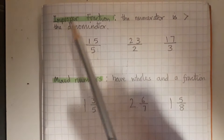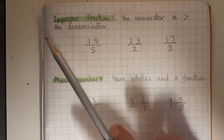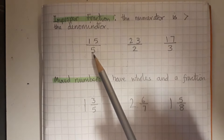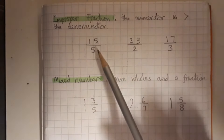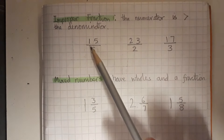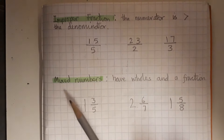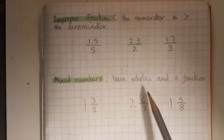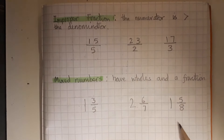We have improper fractions where the numerator is greater than the denominator. Here we can see some examples, and we actually know this really means division. And mixed numbers which have a whole and a fraction — here are some examples of mixed numbers.